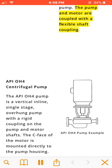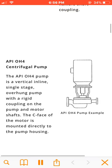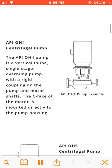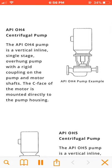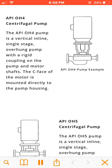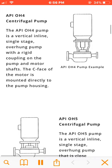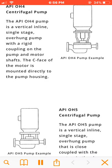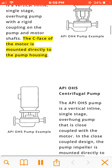The API OH4 pump is a vertical inline, single-stage, overhung pump with a rigid coupling on the pump and motor shafts. The C-face of the motor is mounted directly to the pump housing.